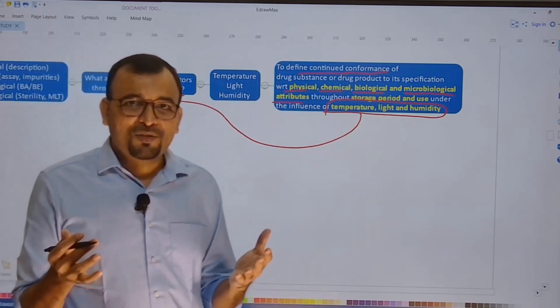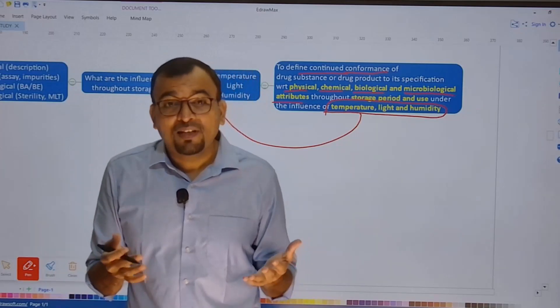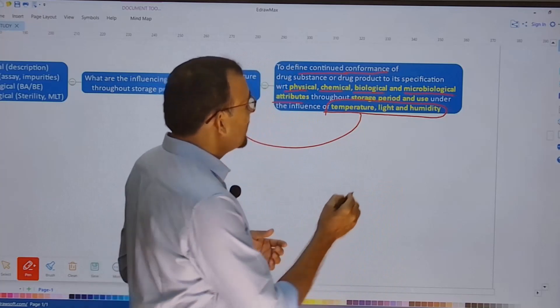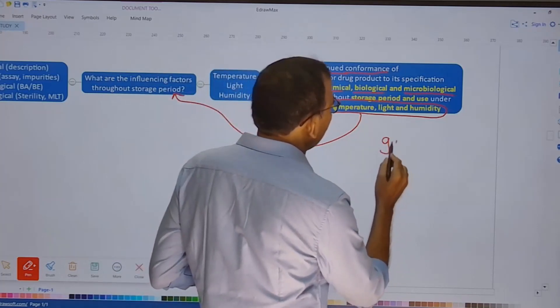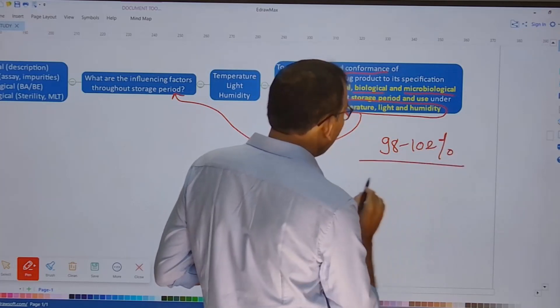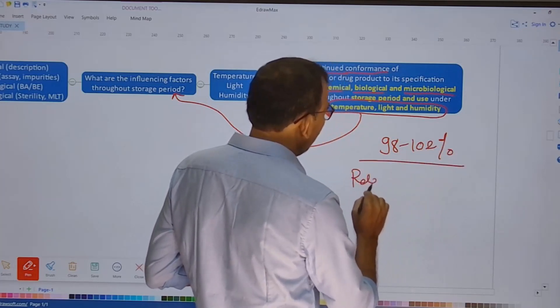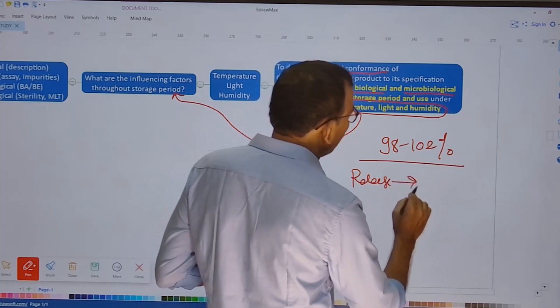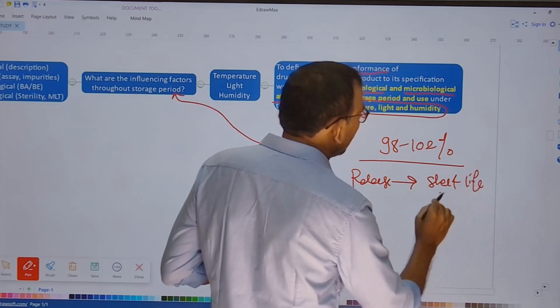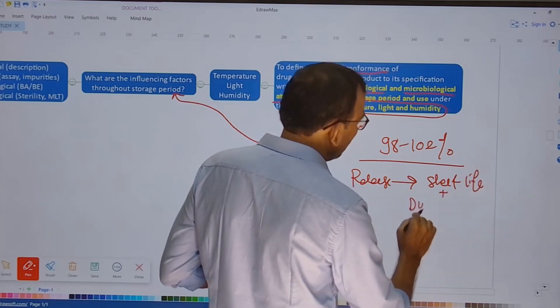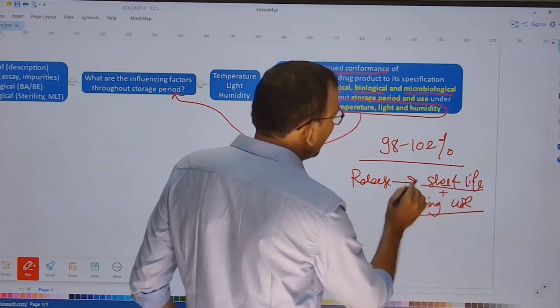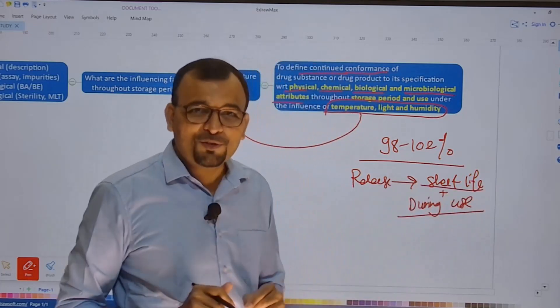If you have set the specification, for example, assay should not be less than 98 percent and should not be more than 102 percent, you have to understand whether your assay is always in between 98 to 102 percent or not. Not at the release time, but throughout shelf life, shelf life plus also during the use. So it is not only required to meet the spec only at the shelf life, but also during the use, during the consumption.